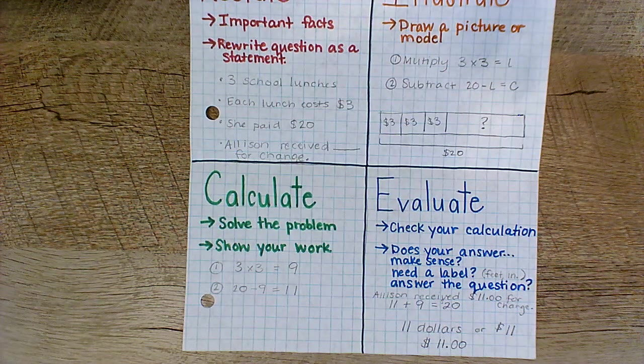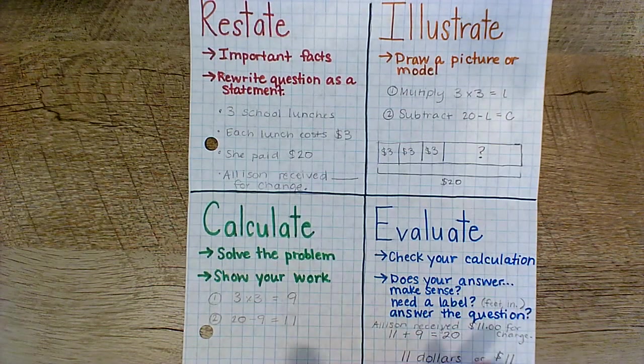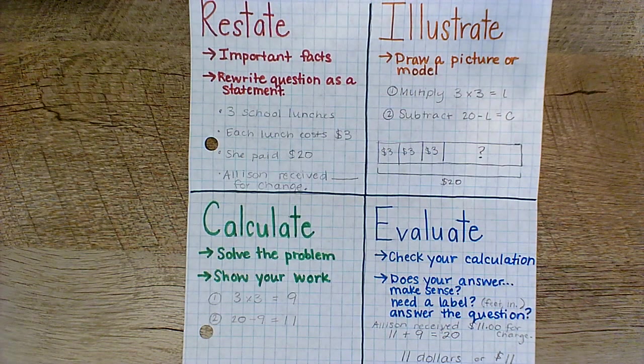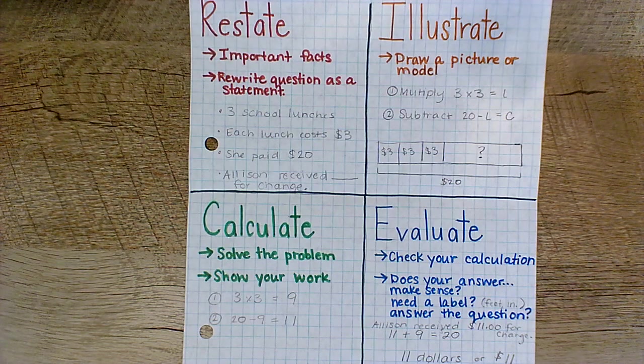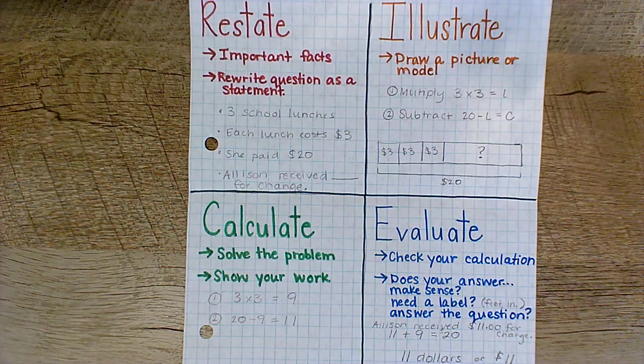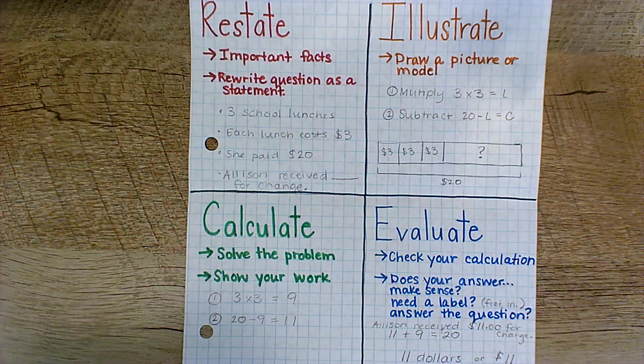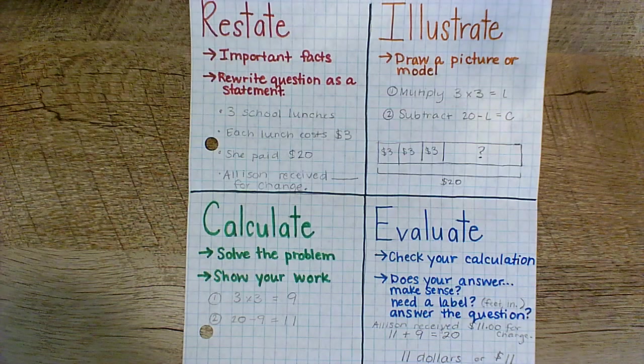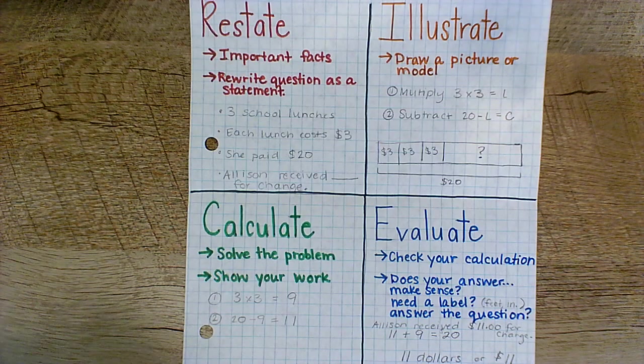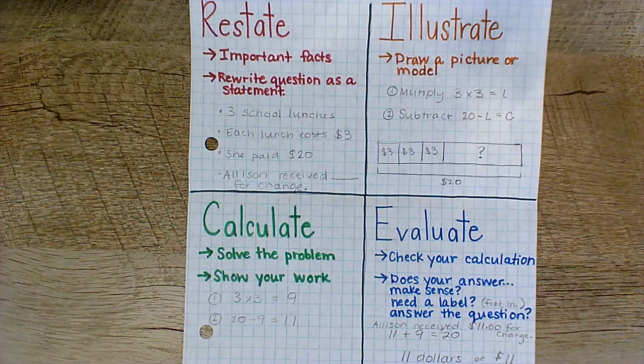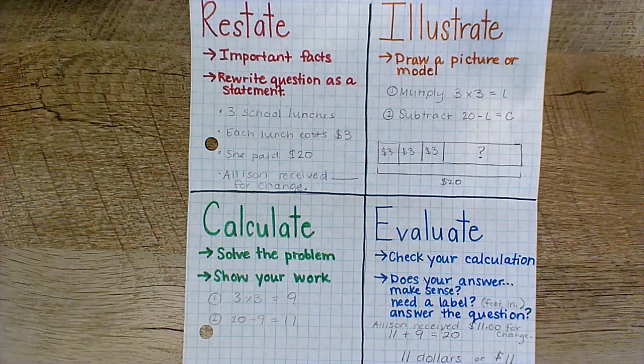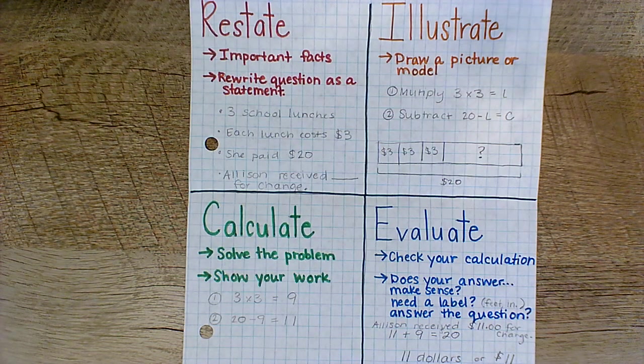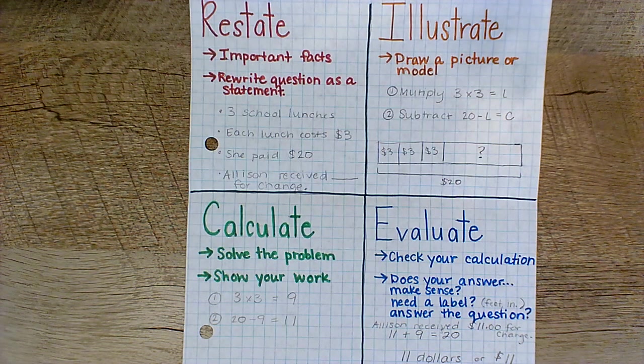Great. I've really thought about this problem and I've used all the steps for the rice method to really check that I'm thoroughly answering the problem and I know I'm processing it because sometimes when we're having to read these story problems, they get a little confusing. But now I can confidently and comfortably say that Allison will receive eleven dollars for change. If you have any questions about the rice method, go ahead and reach out to your teacher and we'll help you out.